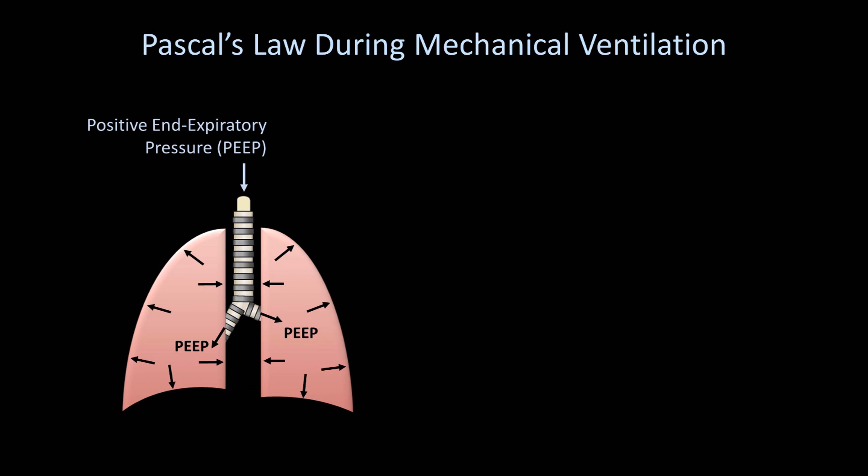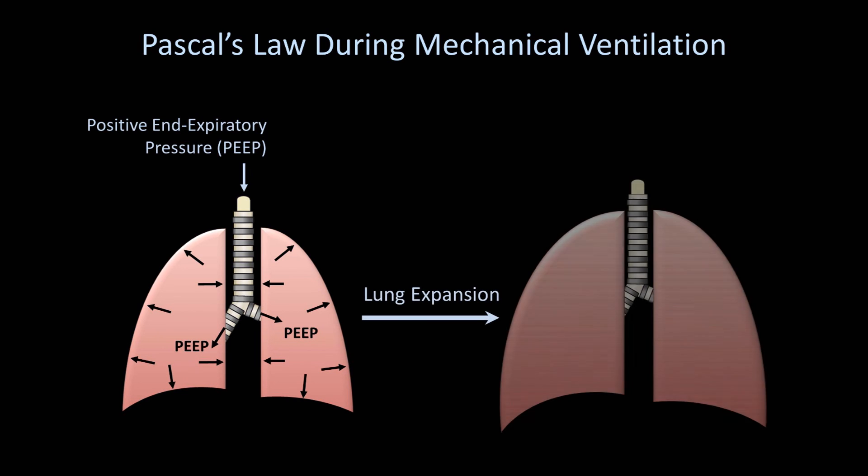What benefit does PEEP have in treating respiratory disorders? Its complete role in pathophysiology is quite complicated, but on the most basic level, since PEEP is transmitted through the lung equally in all directions, the consequence is lung expansion. Lung expansion increases the surface area of the individual alveoli, across which oxygen diffuses into the pulmonary circulation, thus PEEP improves oxygenation within the bloodstream.